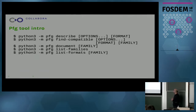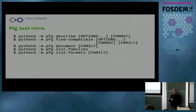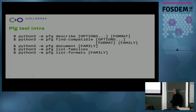Starting from the bottom, you can see list-formats, which lists all the formats we know about for a particular family. List-families lists all the families we know about — SDL, DRM, Vulkan, GL, etc. Then we have the document operation, which prints out the documentation for a particular pixel format family — basically a markdown file. And then we have the most interesting operations: describe and find-compatible, which I will describe shortly.